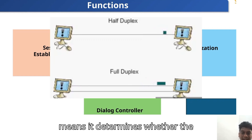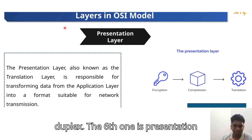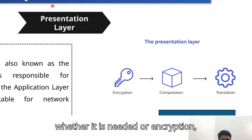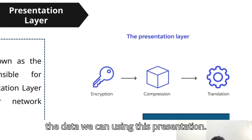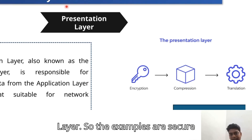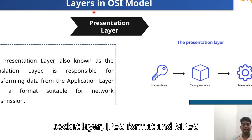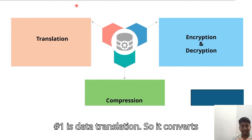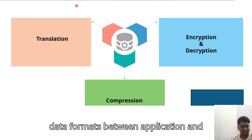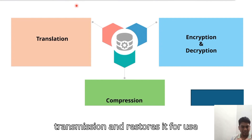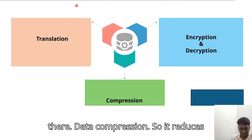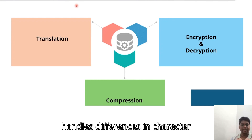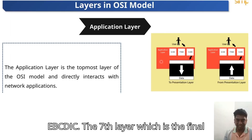The Presentation layer ensures that data is in a readable format for the Application layer. It handles data translation, encryption and decryption, data compression, and formatting. Examples include SSL, JPEG, MPEG, and ASCII formats. Key functions: Data translation — converting data formats between application and network layers; Encryption and decryption — securing data for transmission; Data compression — reducing data size for faster transmission; and Formatting — handling character encoding differences like ASCII to EBCDIC.